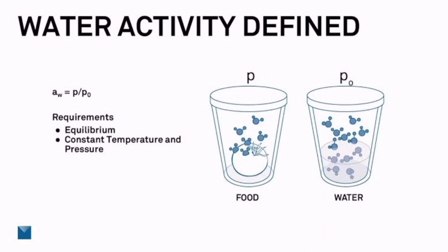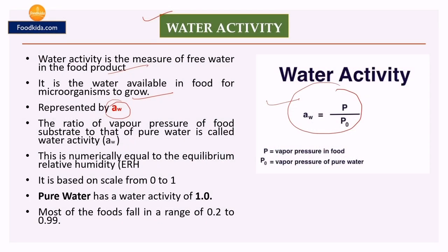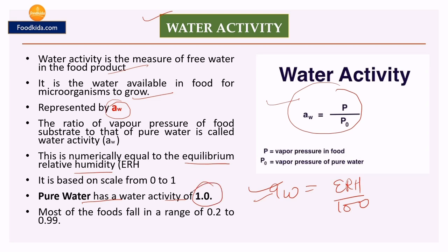Water activity is the free water present in food that is not bound and is available for microbial growth, chemical, and enzymatic reactions. It can also be determined by ERH (equilibrium relative humidity), where water activity equals ERH divided by 100. Various instruments used to measure water activity work on this principle using RH sensors that measure ERH changes. Pure water has a water activity of 1, and water activity ranges from 0 to 1 with no units. Most foods fall in the range of 0.2 to 0.99.